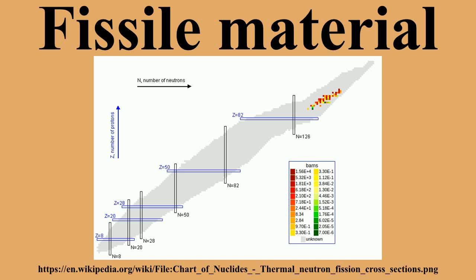In general, most actinide isotopes with an odd neutron number are fissile. Most nuclear fuels have an odd atomic mass number and an even atomic number Z. This implies an odd number of neutrons.